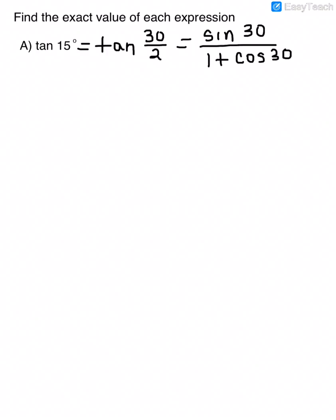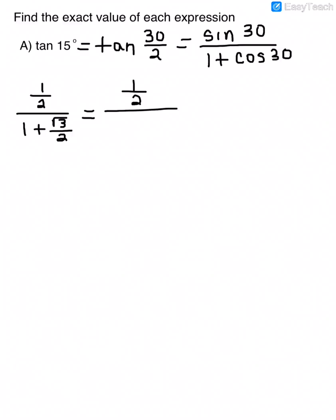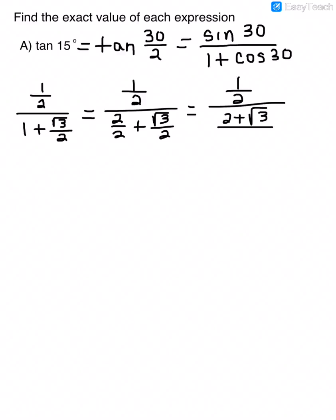We know those values: the sine of 30 degrees is 1/2 and the cosine of 30 degrees is √3/2. Now we just need to simplify. I have 1/2 over — in order to add the two terms together I need a common denominator, so I change the 1 to 2/2 plus √3/2. That gives me 1/2 divided by (2 + √3)/2.